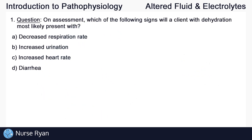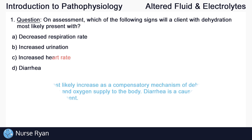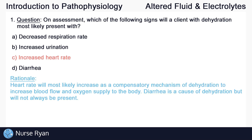Starting off with question number one. On assessment, which of the following signs will a client with dehydration most likely present with? The answer here is C, increased heart rate. Heart rate will most likely increase as a compensatory mechanism of dehydration to increase blood flow and oxygen supply to the body. Diarrhea is a cause of dehydration, but will not always be present.